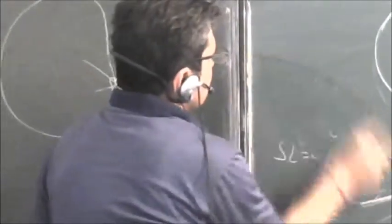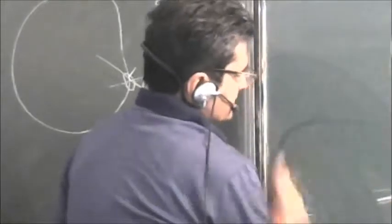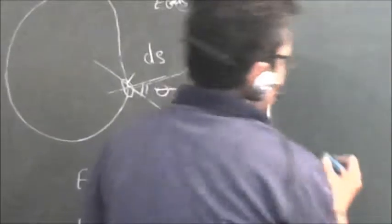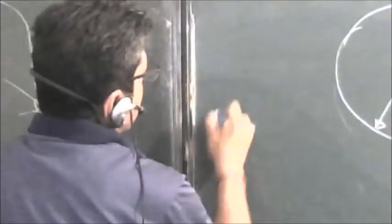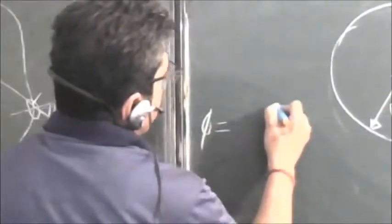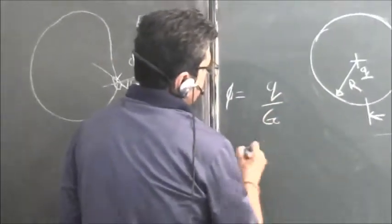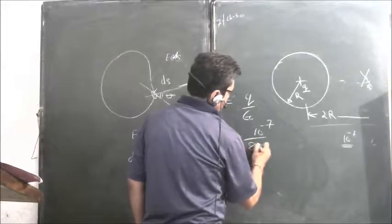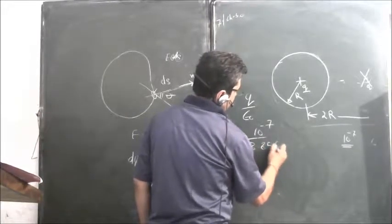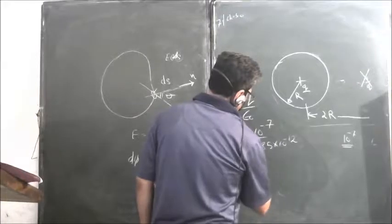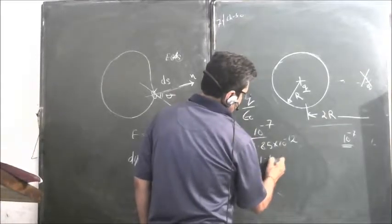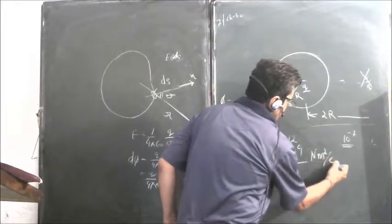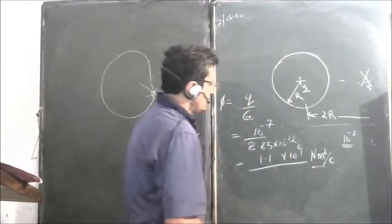So whatever flux will be there is only because of the charge which is inside the sphere. If there are more than one charge, it's the sum of that. So flux would be equal to Q upon epsilon naught, which is 10 to the power minus 7 upon 8.85 into 10 to the power minus 12. This will be approximately 1.1 into 10 to the power 4 newton meters square per coulomb.